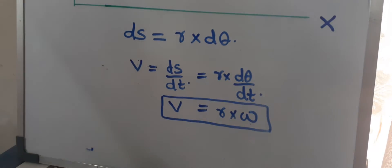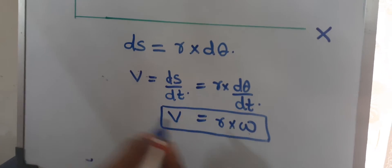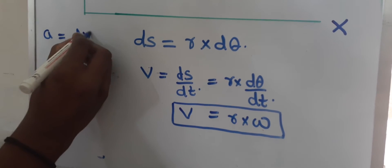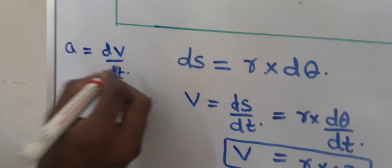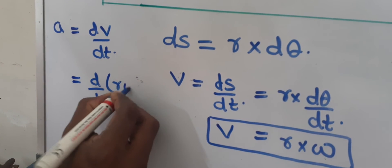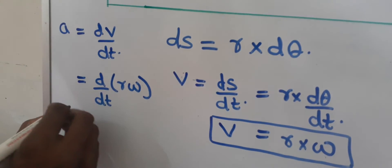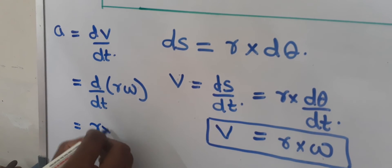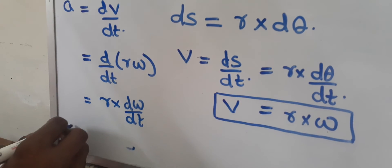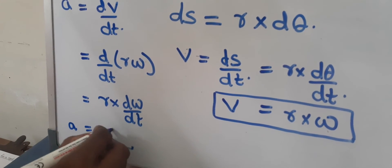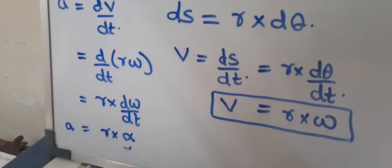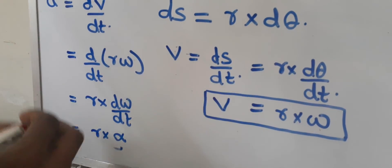Similarly, we have a relation between linear acceleration and angular acceleration. Acceleration equals dV/dT. Since v equals r*omega and r is constant, this becomes r times d-omega/dT, which equals r times alpha, where alpha is the angular acceleration defined as the rate of change of angular velocity. So a equals r*alpha.